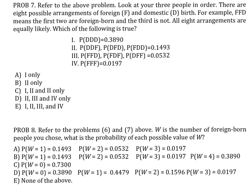In this problem, we're looking for all the possible arrangements of the three people that were selected. Either they would be foreign-born or domestic births. So the possible outcomes are outlined here. These are all the possible arrangements.